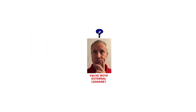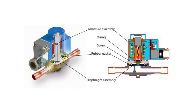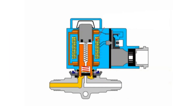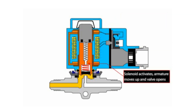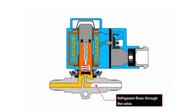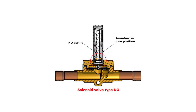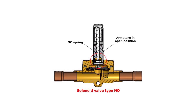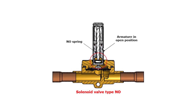Now let us look at the solenoid valve failure where the valve has external leakage. This valve failure is related to both a solenoid valve type normally closed, called NC, where the valve is forced closed by a spring and is open when energizing the coil, as seen here. And valve type normally open, called NO, where the valve is forced open by a spring and is closed when energizing the coil, as seen here.